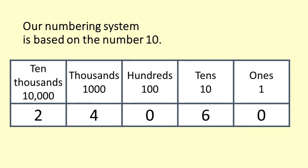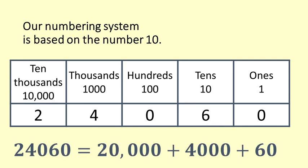The number 24060 has a 2 in the 10,000 column and a 4 in the thousand column so we can see that it is 24,000. Then there is a 6 in the tens column which means that we have 60 more so the total is 24,060. I believe in the US you say 24,060.